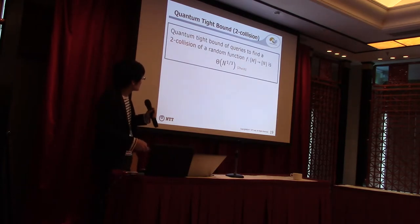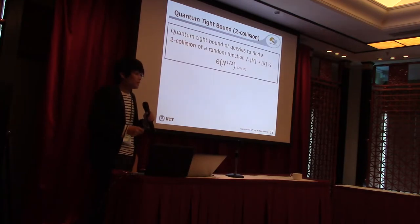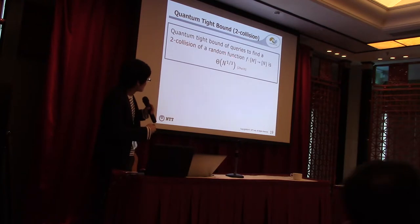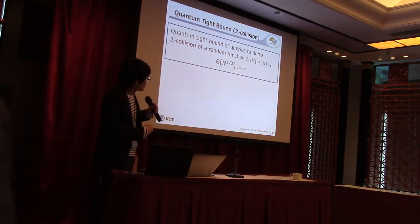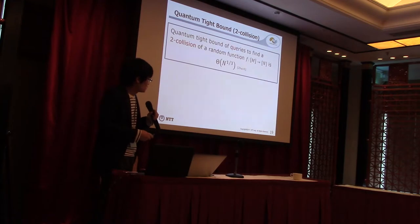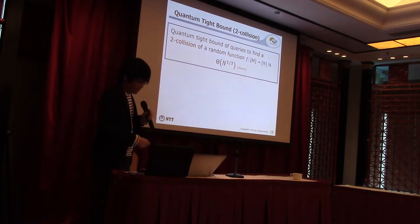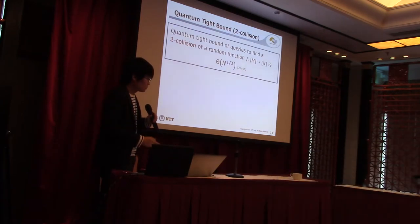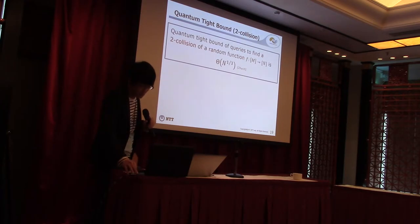Next, I explain the case of 2-collision. For the 2-collision problem, a type bound is known. The quantum tight bound of queries to find a 2-collision of a random function is order n to the power 1/3. This result was given by Brassard et al. This bound, n to the power 1/3, is lower than n to the power 1/2, and thus this bound is a non-trivial bound.